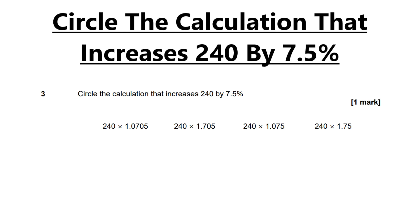So option one: 240 times 1.0705. I like to see it as the one before the decimal point being 100%. The next column after that — the 0.0 — I see as the 10 column. So how many 10s are we increasing it by? In this case, none. The next is the single unit percentage column, so we've got 7 units there — that's 7%. The next column with a 0 is a tenth of a percentage, and then the 5 beyond that is a hundredth of a percentage. So from that, I know it's going to be 7.05%, and that's probably one of the harder ones to work out because of how it's phrased.